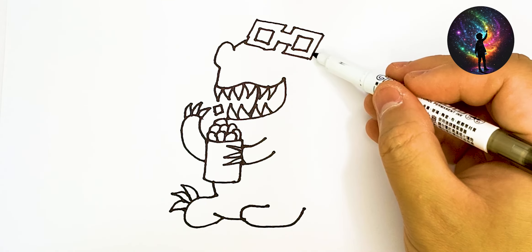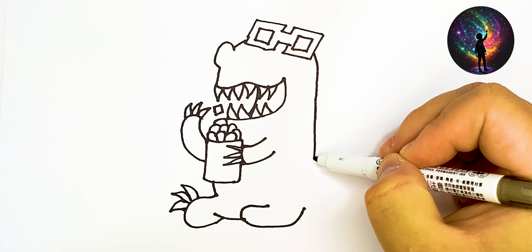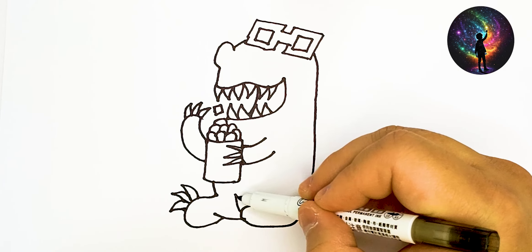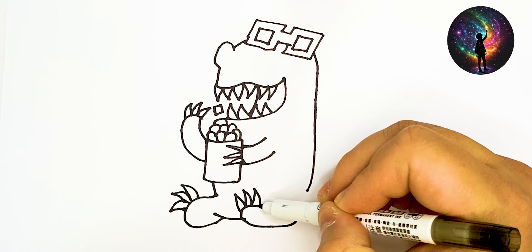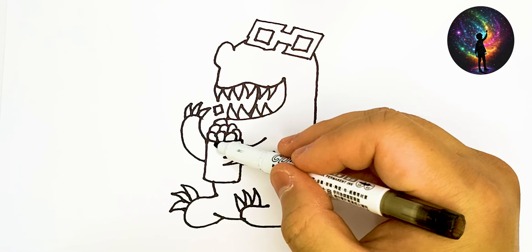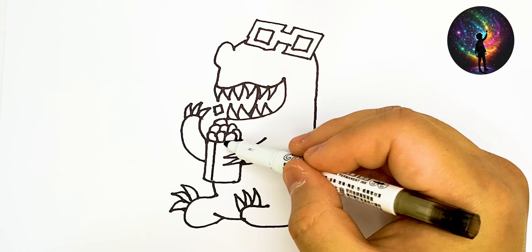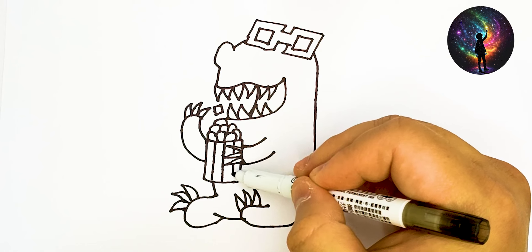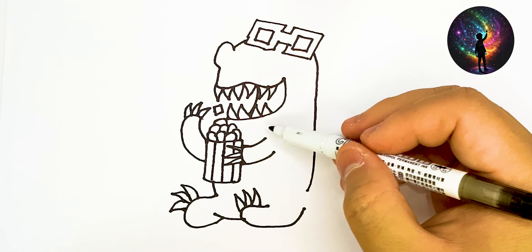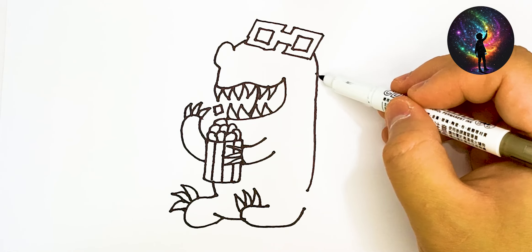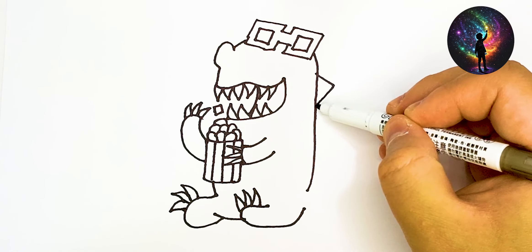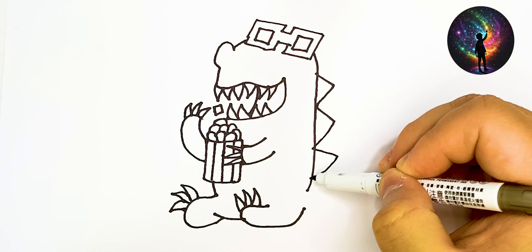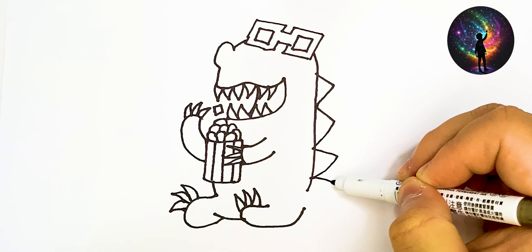A, B, C, D, E, F, G, H, I, J, K, L, M, N, O, P, Q, R, S, T, U, V, W, X, Y, Z. Now I know my ABCs. Next time won't you sing with me?